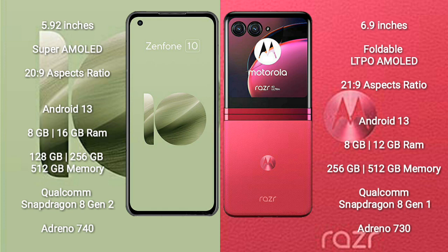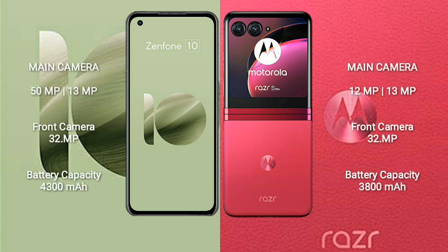Motorola RAZR 40 Ultra runs on Android 13 and comes with 8GB or 12GB RAM and 256GB or 512GB internal storage. It features a Qualcomm Snapdragon 8 Gen 1 processor and GPU Adreno 730. ASUS Zenfone 10 has a rear dual-camera setup of 50MP plus 13MP and a 32MP front camera. Motorola RAZR 40 Ultra has a rear dual-camera setup of 12MP plus 13MP and a 32MP front camera.